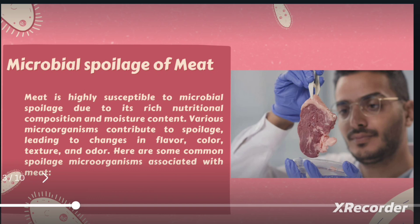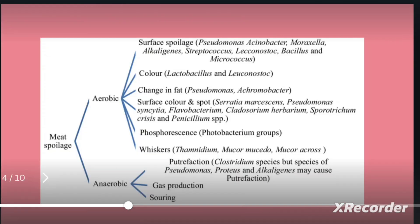There are also various microbiota already present inside the meat which can start degrading or deteriorating the meat products. We can observe whether meat is spoiled through visual observation, and changes in flavor, texture, and odor are some of the key signs indicating spoilage by microorganisms.